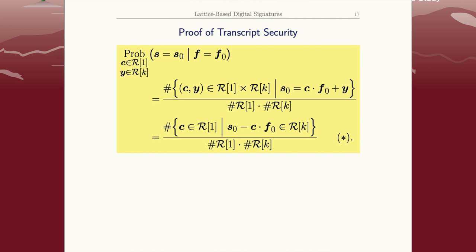And I divide that by the total number of possible c's and y's. Okay, so this is just how you compute this probability by listing the number of elements in the set that are winning numbers divided by the number of elements in the set total: number of winning tickets over number of total tickets.